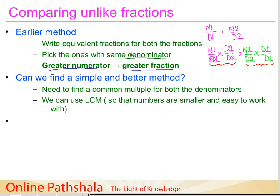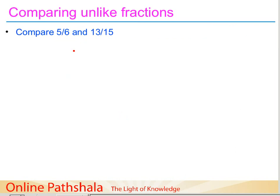What we want is to remove the iteration needed in the first method and avoid very large numbers from the second. We need to find the smallest number that is a common multiple of both denominators, which we can do using the Least Common Multiple (LCM). The LCM is the minimum number that is a multiple of both. Once we have the LCM, we multiply both fractions by a number so that their denominators equal that LCM.